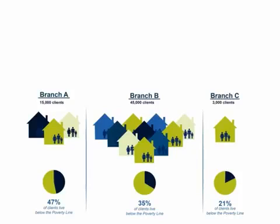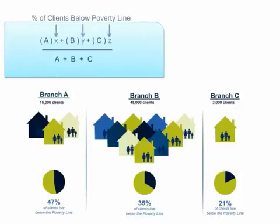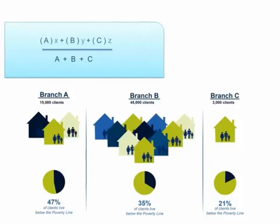The formula looks like this: multiply each branch's poverty rate by the number of clients surveyed at that branch. Find that number for each branch and add those numbers together. Then divide by the total number of clients surveyed at all branches.